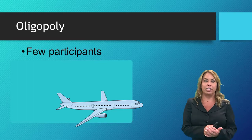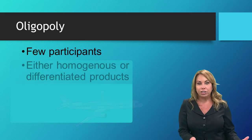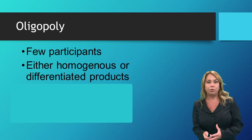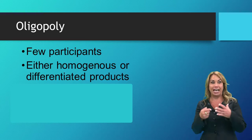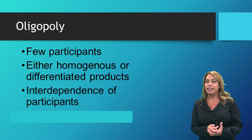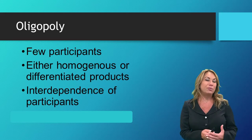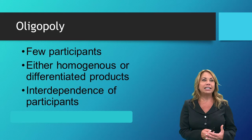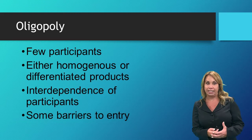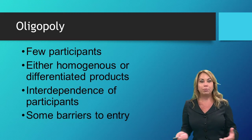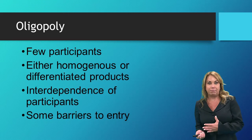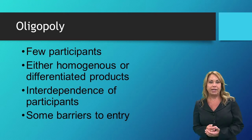Another characteristic of an oligopoly is that products could be either homogeneous or heterogeneous — meaning maybe they're exactly the same, maybe they're not. However, because there are few participants in the industry, they tend to work together to some degree — that's what we mean by interdependence of the participants. Lastly, with an oligopoly there are significant barriers to entry; for instance, airplanes are very capital intensive to produce, so naturally there aren't that many manufacturers.